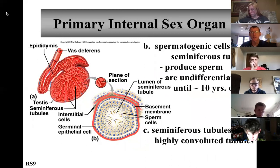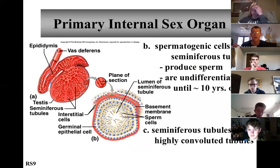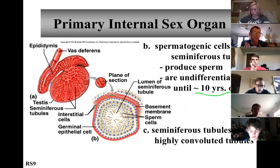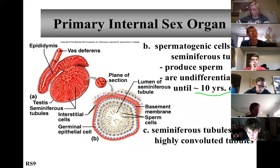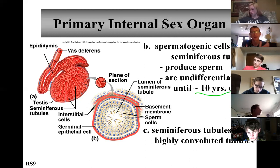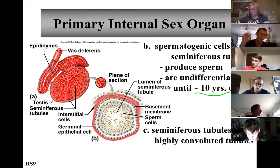Spermatogenic cells line the seminiferous tubules and produce sperm. Those cells are undifferentiated until about the age of 10. They mature right before puberty — a four-year-old kid is not producing actively swimming sperm cells. He has all the cells needed to do so, but until he hits puberty and starts to produce LH and FSH — luteinizing hormone and follicle-stimulating hormone — in increasing levels, he's not producing any sperm cells, just like young girls aren't ovulating any eggs. This is all hormonally regulated.